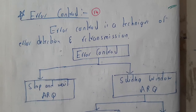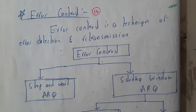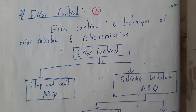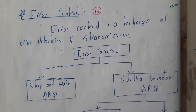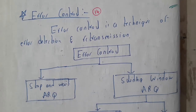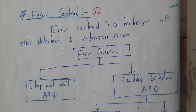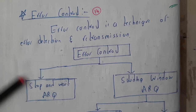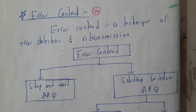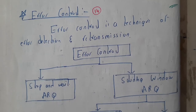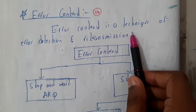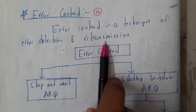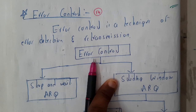Hello guys, we are back with our next tutorial. In this tutorial, let us go through error control. In the last tutorial we covered flow control and the basics. Even if we follow all those flow control mechanisms, there are still many chances of errors. Error control is a technique of error detection and correcting or retransmitting them.